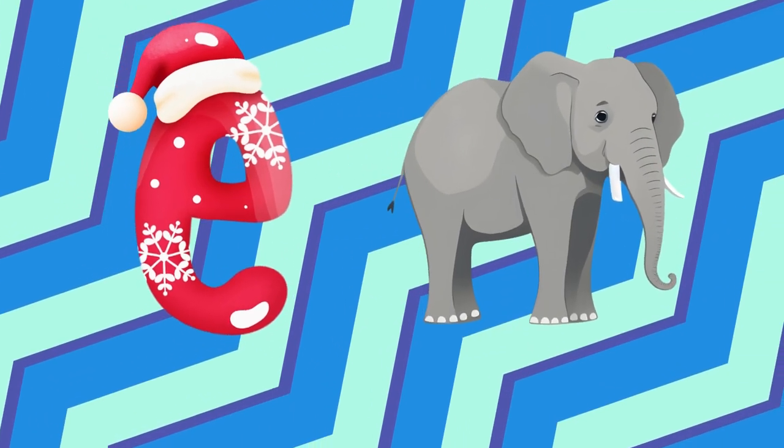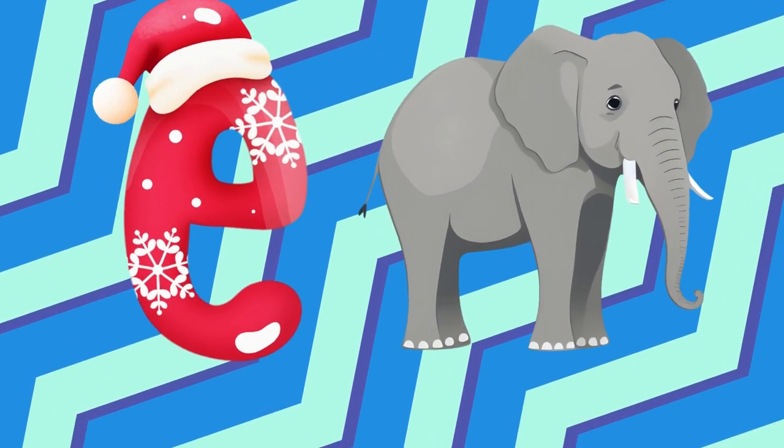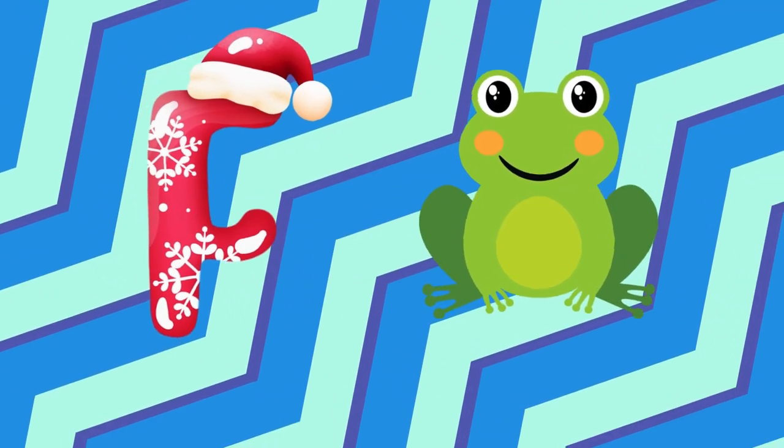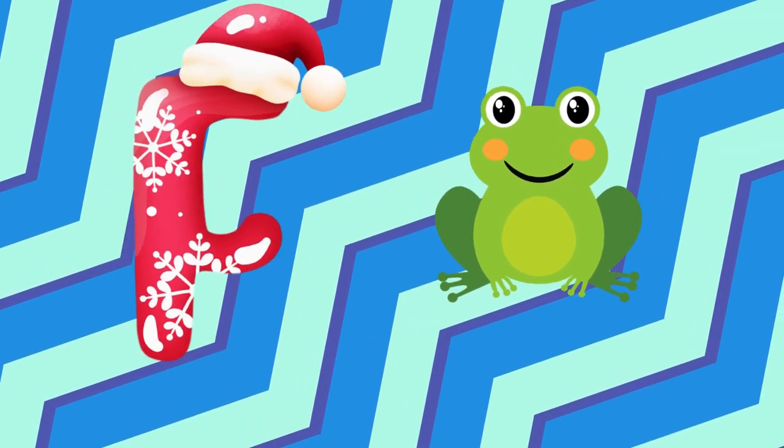E is for elephant, e-e-elephant. F is for frog, p-p-frog.